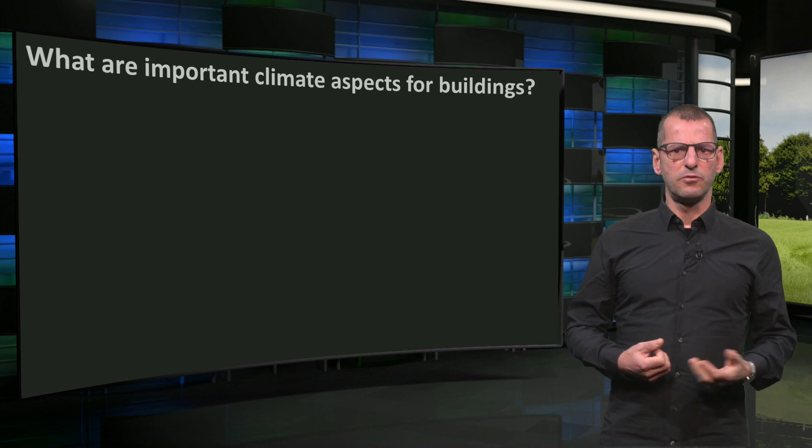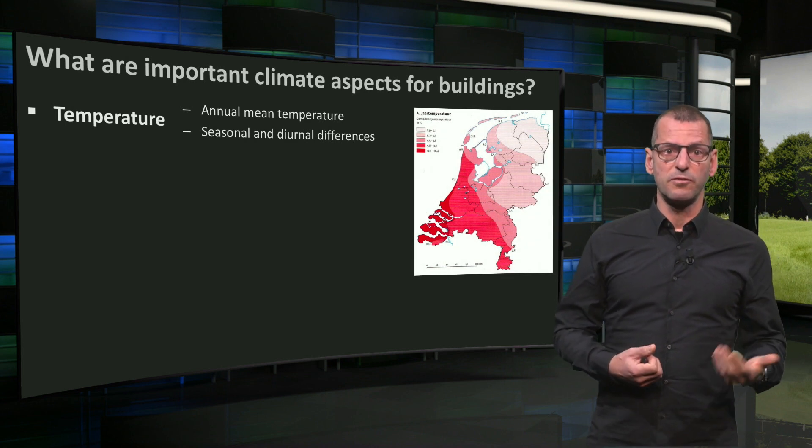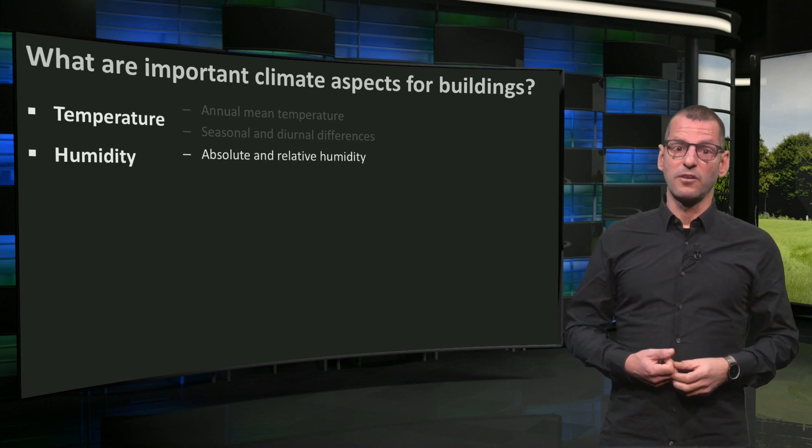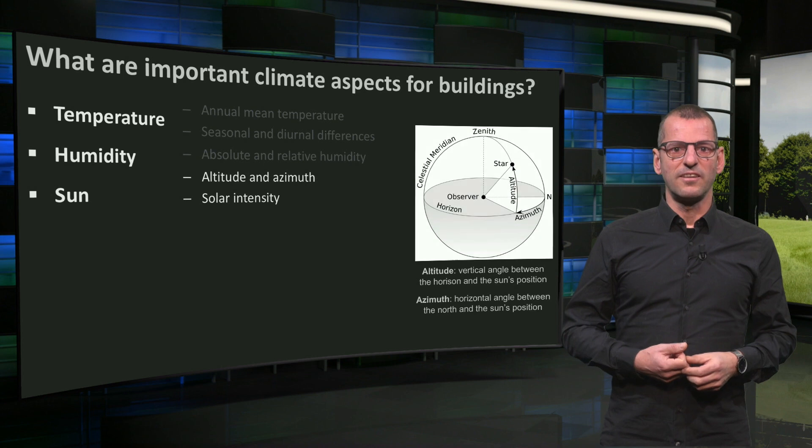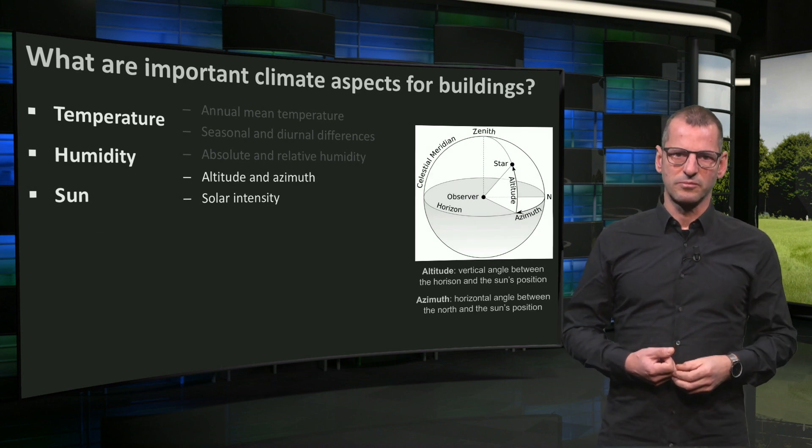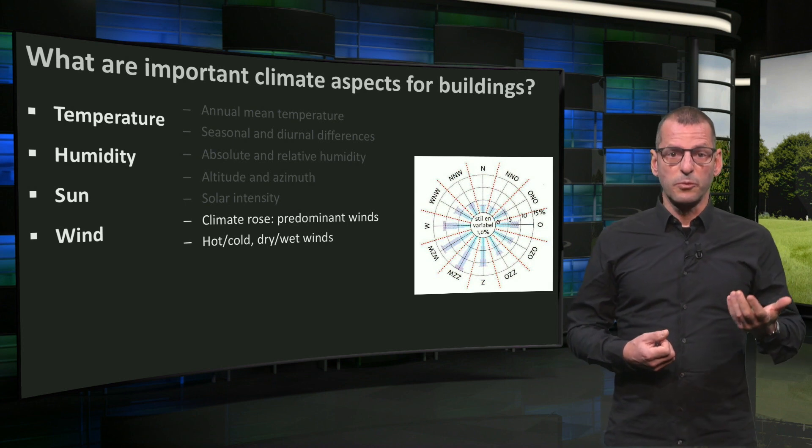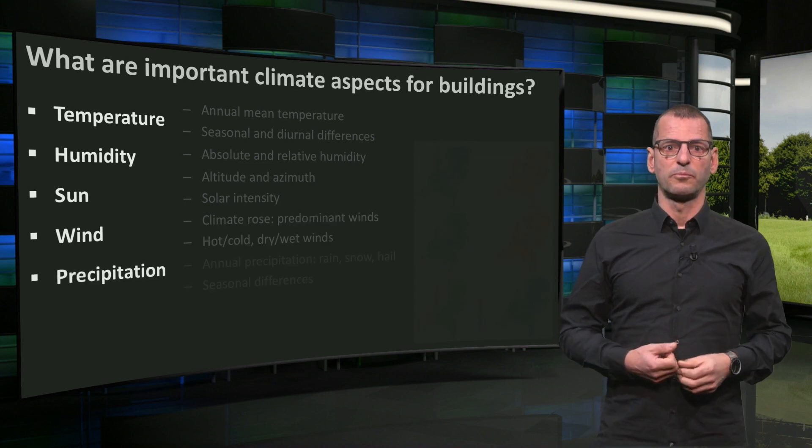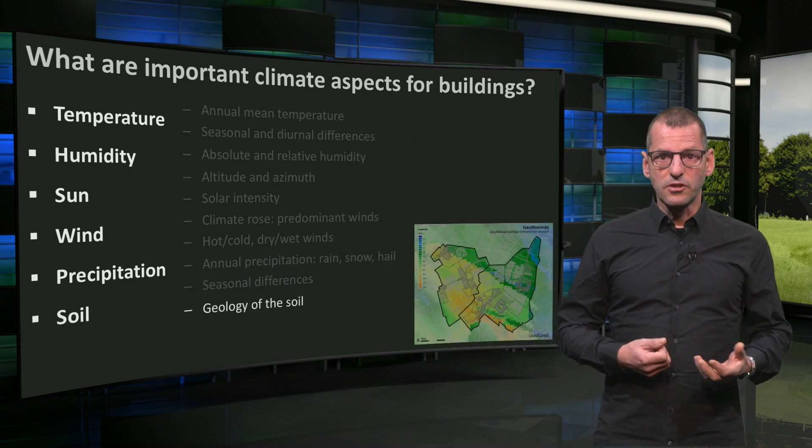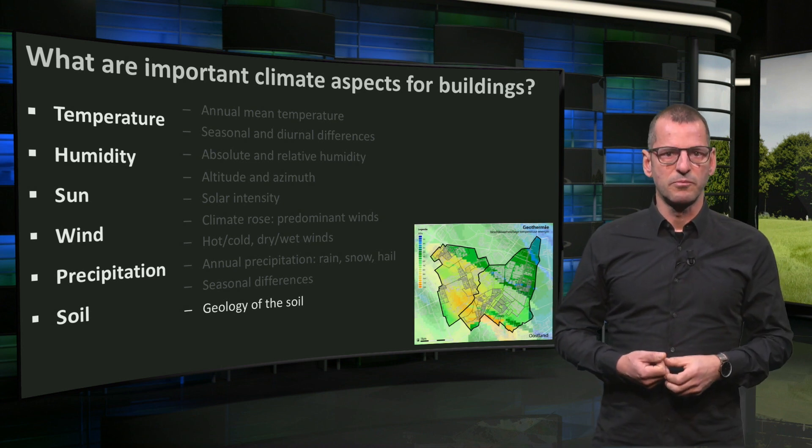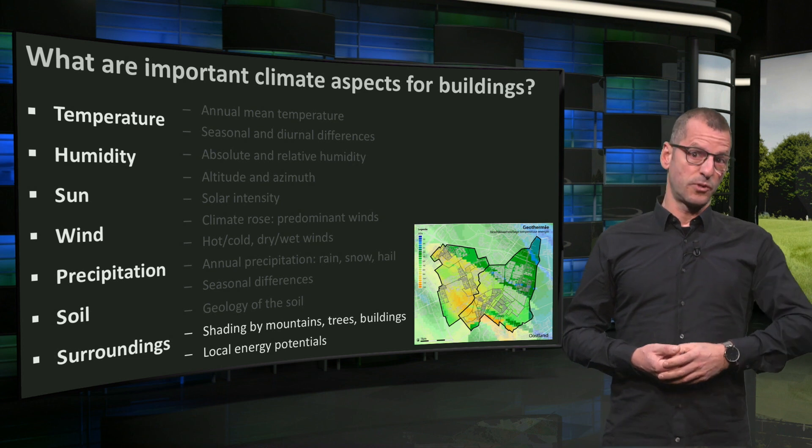Let's see which climate aspects you need to know before you can design a sustainable building. Temperature, it's good to know the annual mean temperature, but also the diurnal differences. Humidity, both the absolute and the relative humidity are important to understand what you can do with heating and cooling. Sun, you need to understand the course of the sun through the sky, as well as the solar intensity. Wind, a climate rose tells you the predominant winds, and if you understand the topographical situation, you can tell if these winds are mainly wet or dry, warm or cold. Precipitation, annual values and seasonal differences are important to know. Soil, the underground and its geology define the options to use soil energy. And finally, surroundings. Mountains, trees and buildings can cast shadows onto your building, and there may be different local energy potentials you can utilize.